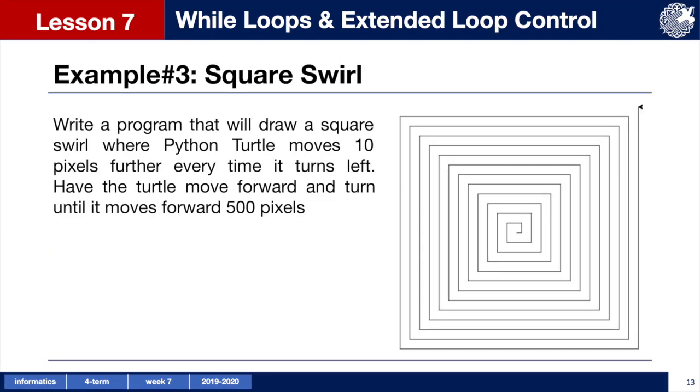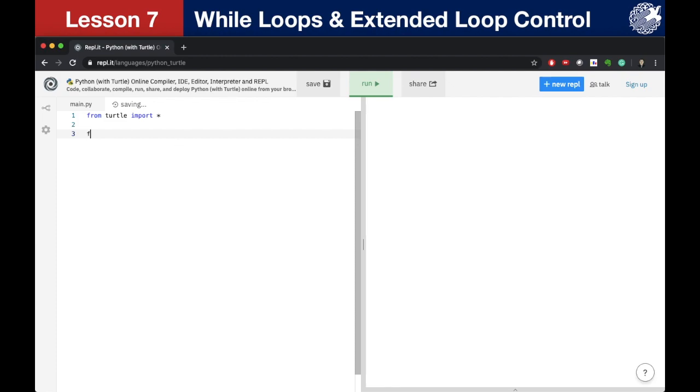In the next example, we want to have our turtle draw a square shaped swirl, where the turtle moves 10 pixels further after it turns left until it moves forward 500 pixels. Let's start by initiating our loop. Then let's use extended parameters to control the value of i in our loop. I want the turtle to move 10 pixels at first and then 10 pixels further each time, so I can use 10, a number greater than 500, and counting by 10. I want our turtle to move forward for the distance of i, and then I want to turn left for 90 degrees.